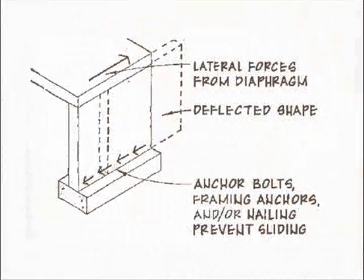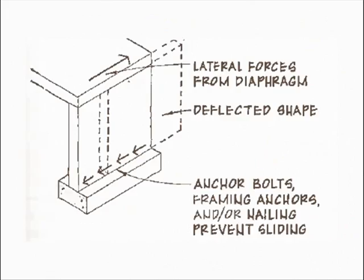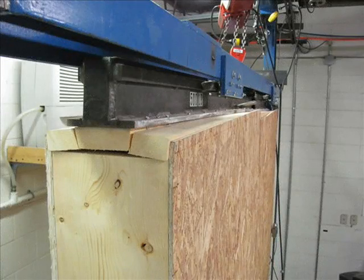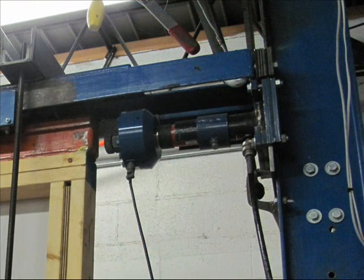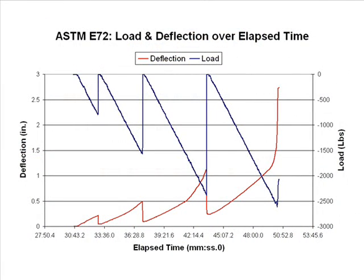The test is performed by fixing the bottom of the frame to a rigid support. The top is placed between lateral guides to prevent out-of-plane movement. Load is then applied to the top of the frame at a constant rate of change in three increasingly more forceful stages where all load is removed between stages.